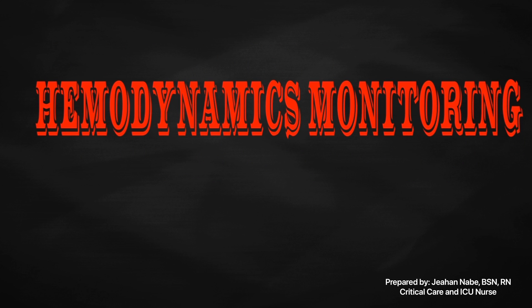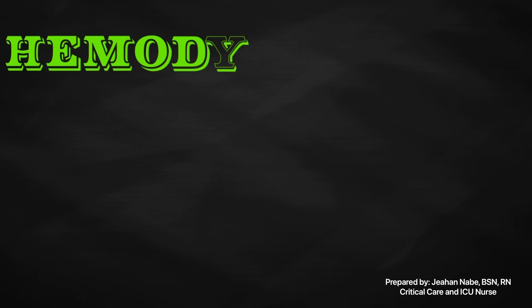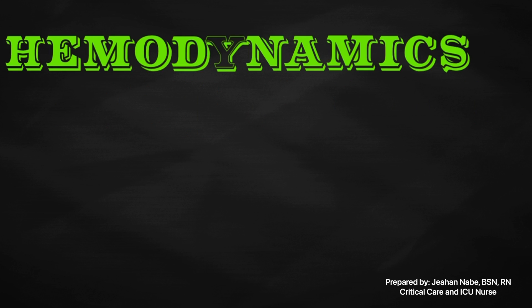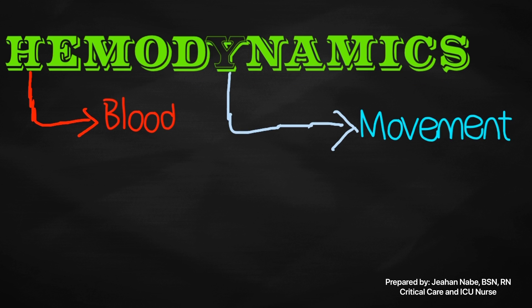Let's dive into our lesson. First, let's define Hemodynamics. From the term itself, 'hemo' means blood and 'dynamics' means movement. Therefore, hemodynamics is a general term referring to the movement or flow of the blood. More specifically, this term refers to the measurement of and general principles governing the flow of blood in the human body.